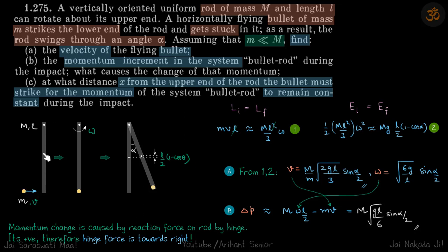You can imagine like this: suppose there were no hinge. If there were no hinge and if the particle strikes here, the rod will start to rotate like this. Now you can imagine that the actual velocity of the top point of the rod is towards left.